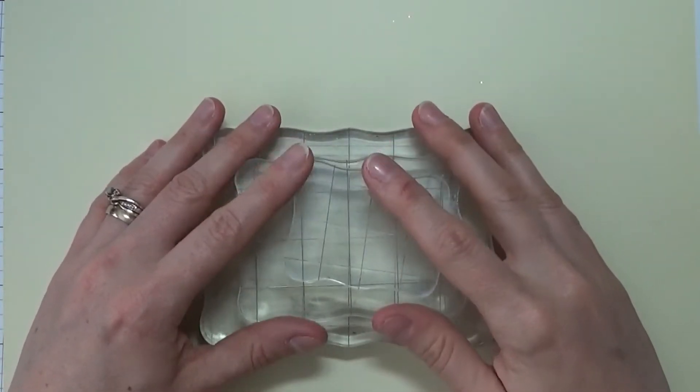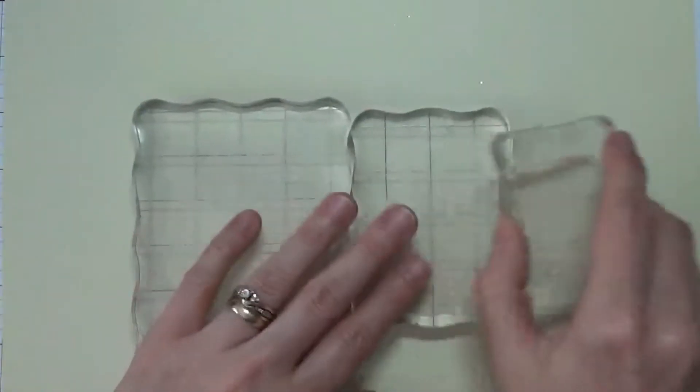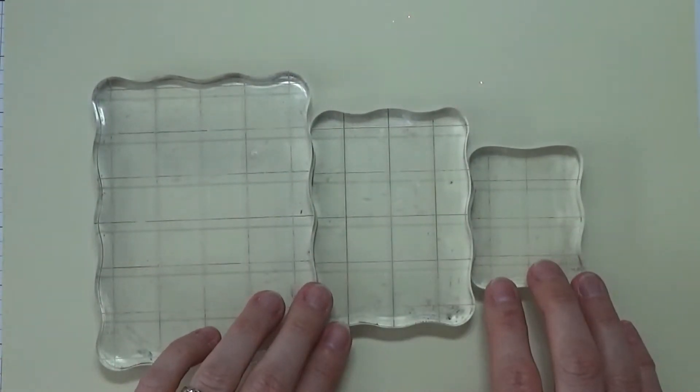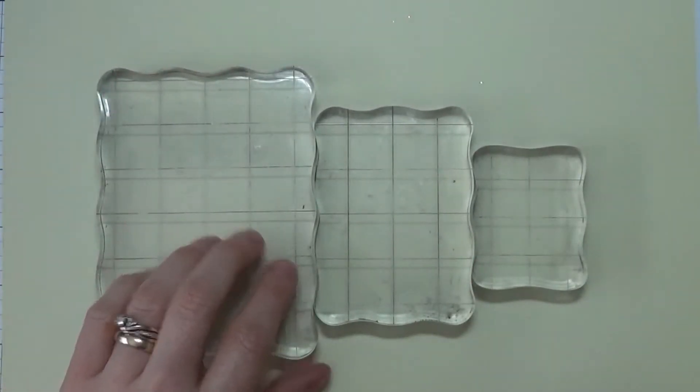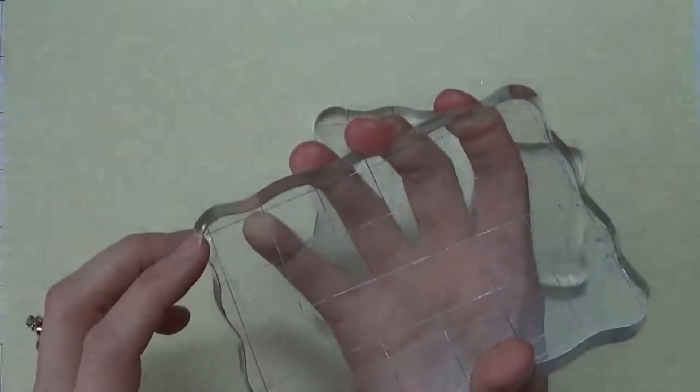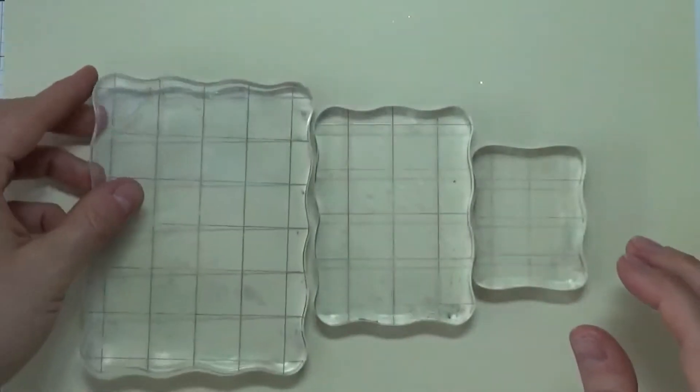To start out, these blocks here I've had for a really long time. These are from Inkadinkadoo. I really liked them because they weren't straight and they have these little marks here in the side, these little grooves for you to put your fingers, and this just helps to be able to grip the block better.